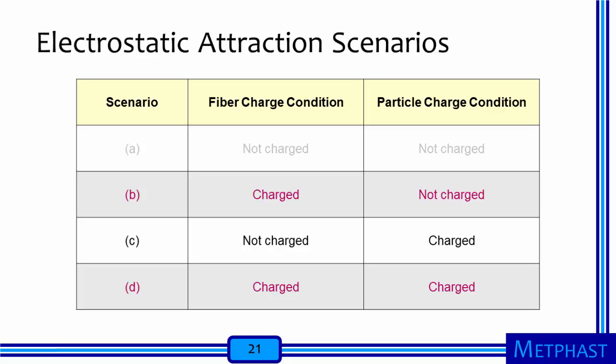An important filtration mechanism we have not yet discussed is electrostatic attraction. Electrostatic charges can be built into fibrous filters to enhance their efficiency. Four different scenarios can be considered related to fiber and particle charge conditions: neither fibers nor particles carry charge; just the fibers are charged but not the particles; the particles are charged but not the fibers; and both the fibers and the particles carry charge. When considering filtration by electrostatic attraction, we are generally interested in filters made from charged fibers and particles from workplace or outdoor environments, where there is a distribution of charges, so we focus most on scenarios B and D.